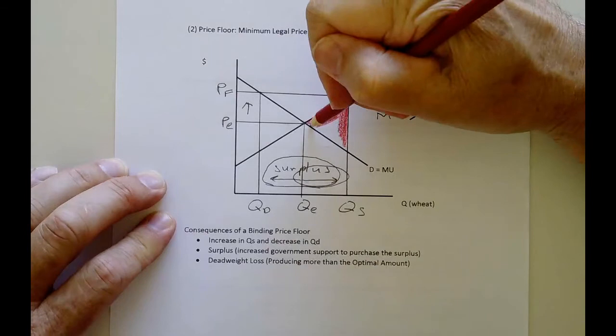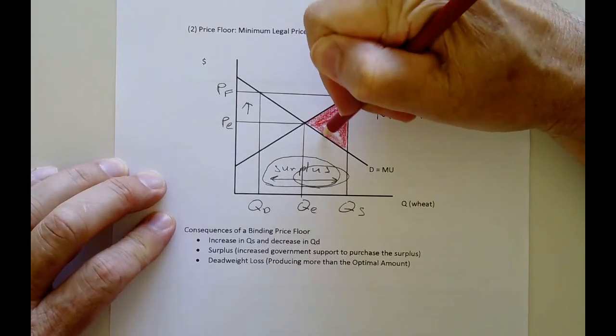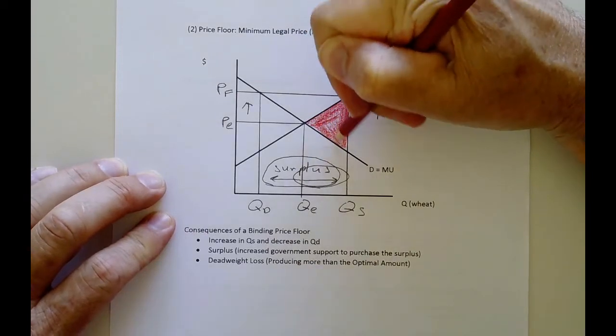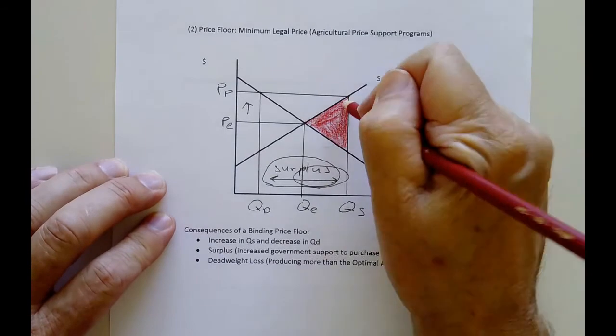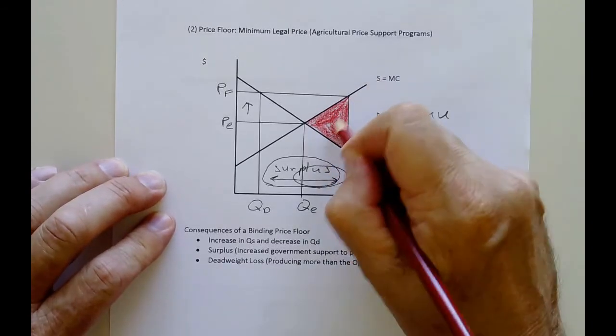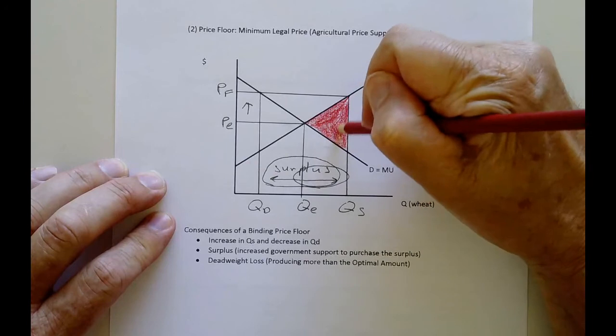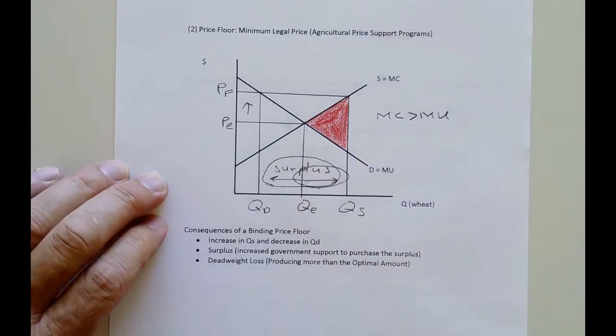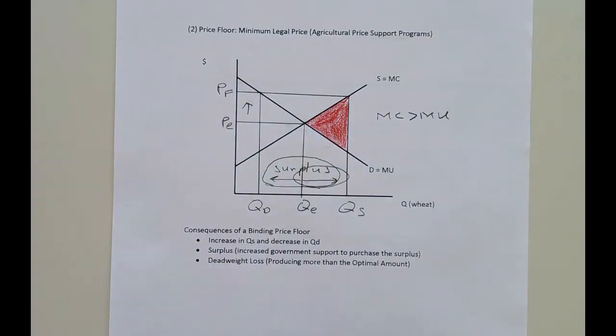And this all represents, especially in farming, this represents a lot of damage to the environment, because it causes farmers to plant a lot more crops than they would normally do. It causes them to use a lot more chemical fertilizers, overuse the soil. And so we have a lot of damage being done to very good farmland through these price floor systems.